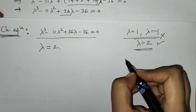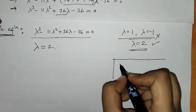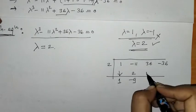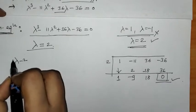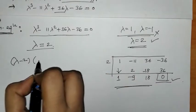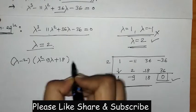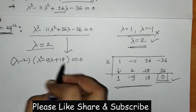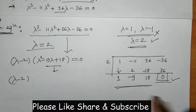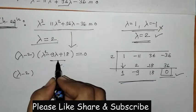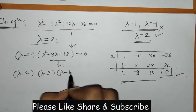The second root we find by synthetic division. The first factor is lambda minus 2, and the second quadratic factor is lambda squared minus 9·lambda plus 18. We have done this factorization, and now we can find the roots of this quadratic equation easily. Its factors are lambda minus 3 and lambda minus 6.